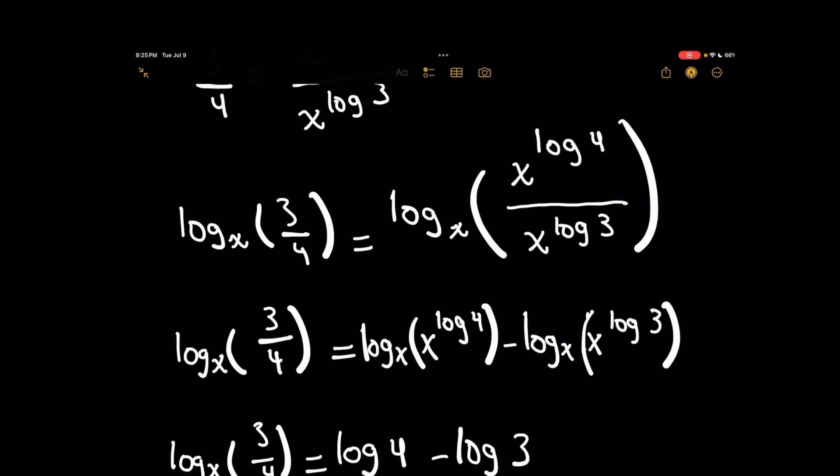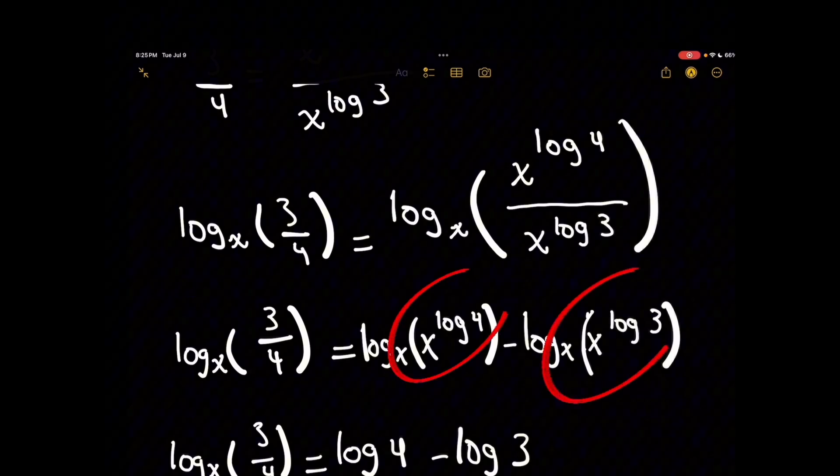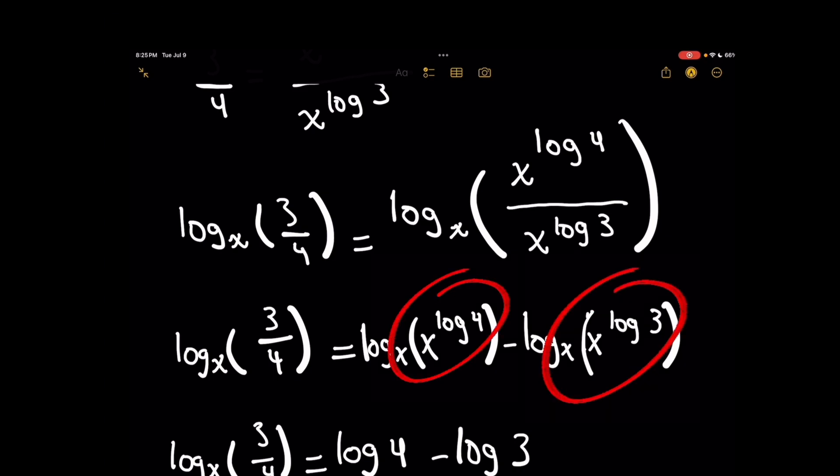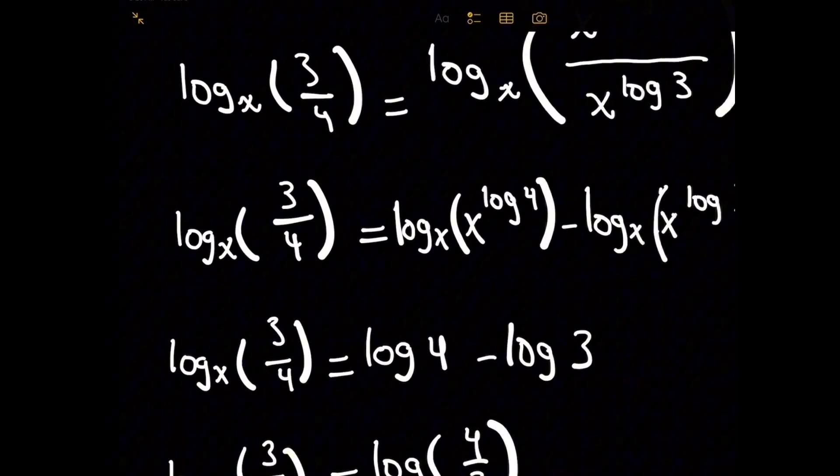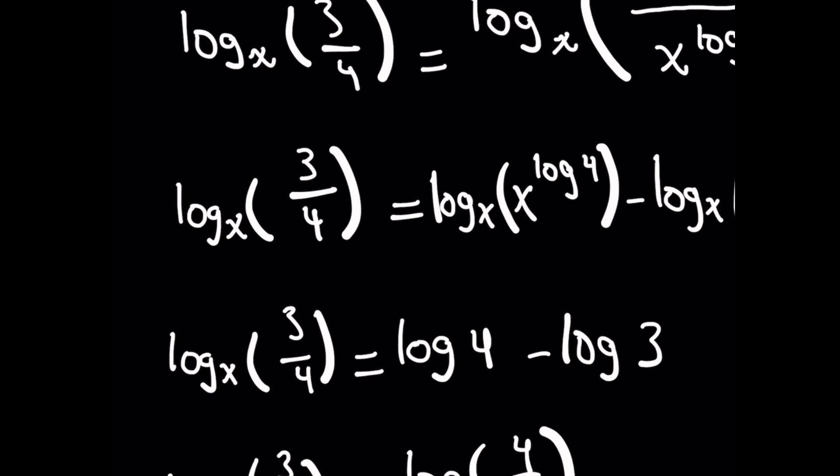Already now, we see another cool trick we can use. The log base x of x raised to some power is simply that some power. The log and the exponent essentially cancel out here, so the right-hand side now becomes log of 4 minus log of 3.